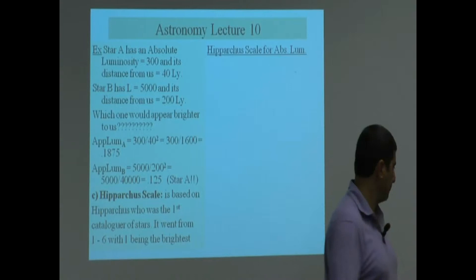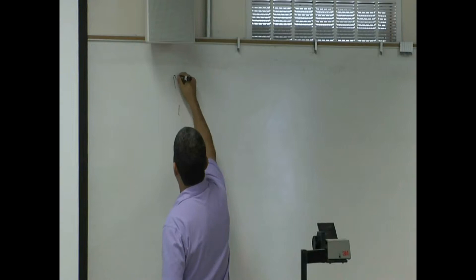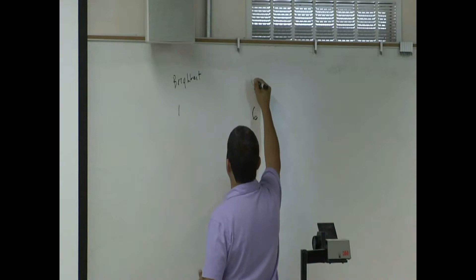So his scale went something like this. Whenever he saw a star that was very, very bright looking, he called that star 1. So this was the brightest. And then 2, 3, 4, and then 6 was the least brightest, or we can call it dimmest.